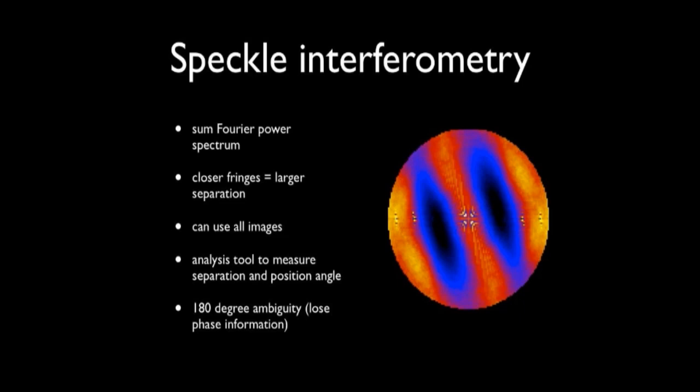The next step is speckle interferometry. In my pipeline, I use speckle interferometry simply as an analysis tool for the data. I don't reconstruct an image with the speckle interferometry. I just use these fringe patterns to measure the position angle and separation of the stars that I detected in the lucky imaging.